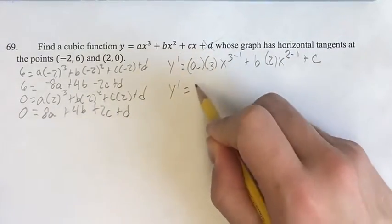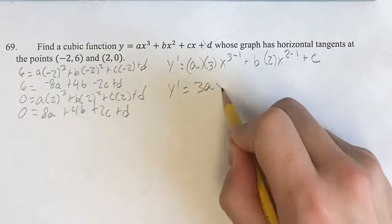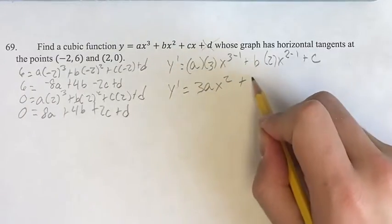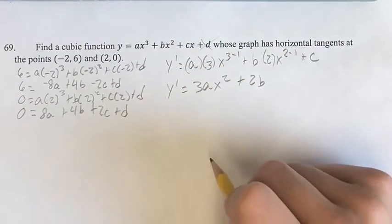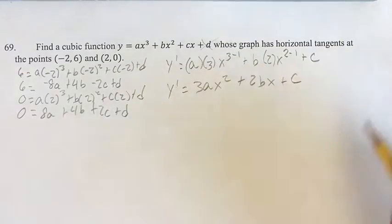So the derivative is 3a x squared, plus 2bx, plus c.